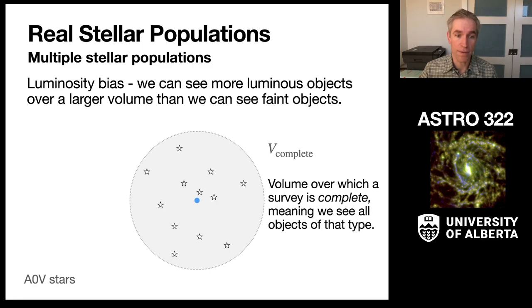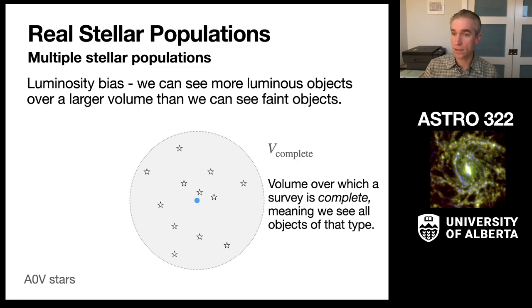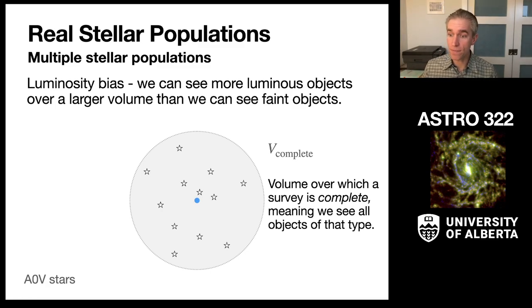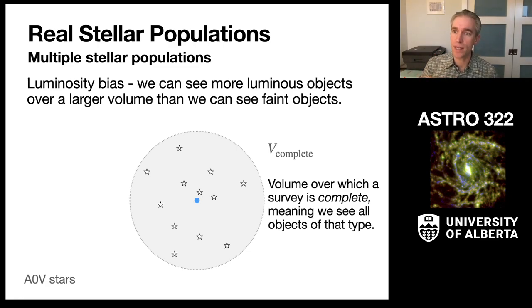We call the space over which we can see all these stars the completeness volume — the volume of space where we are seeing nearly all of a given stellar type, or more to the point, where we know how many stars we are seeing and how many we are missing. We consider the volume over which a survey is complete, which is set by the properties of the survey telescope. The better the telescope, the deeper the completeness, and you can see the same object farther away, so it's complete over a larger volume.